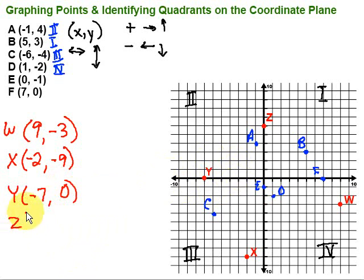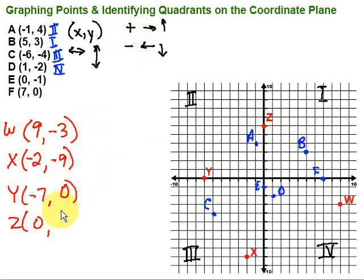Finally, point Z. How do I get there? I don't go left or right at all — it's right above me. So I go left or right 0; that's my x-coordinate. Then 1, 2, 3, 4, 5, 6 to get up to Z. Up is positive, so that's positive 6. The point is 0, 6.